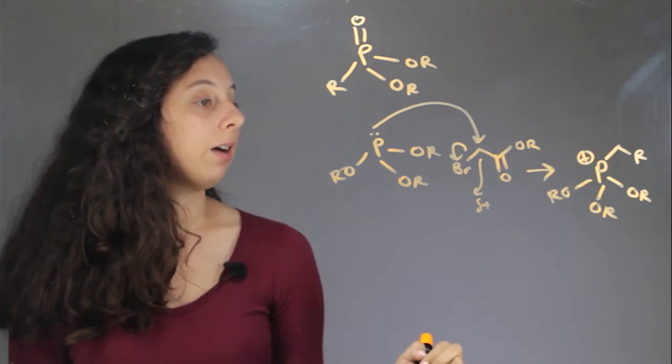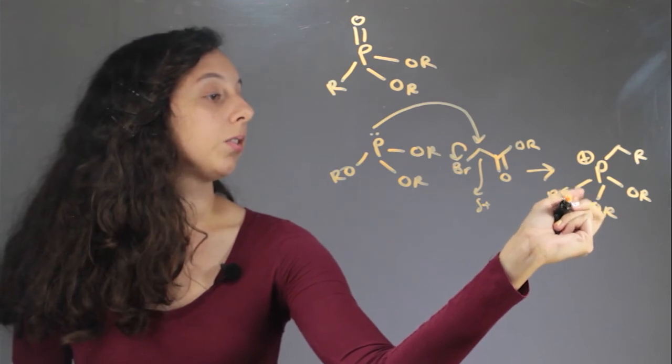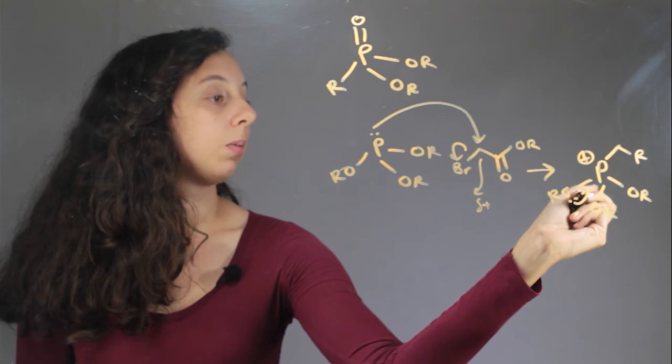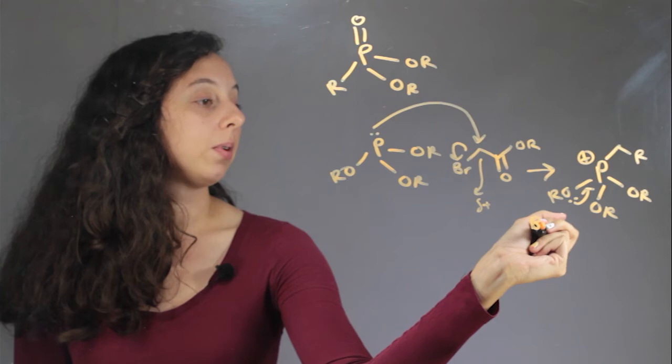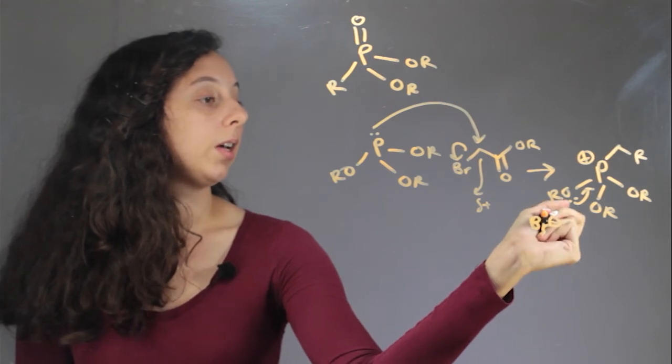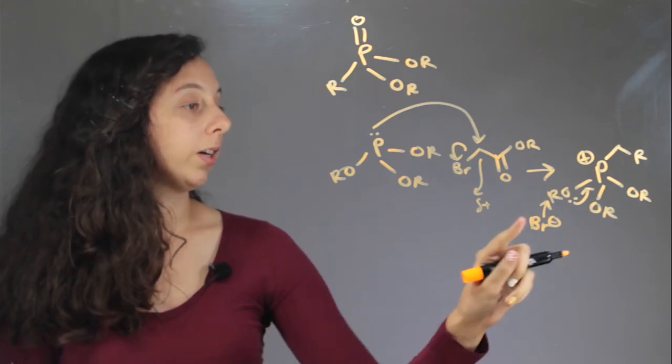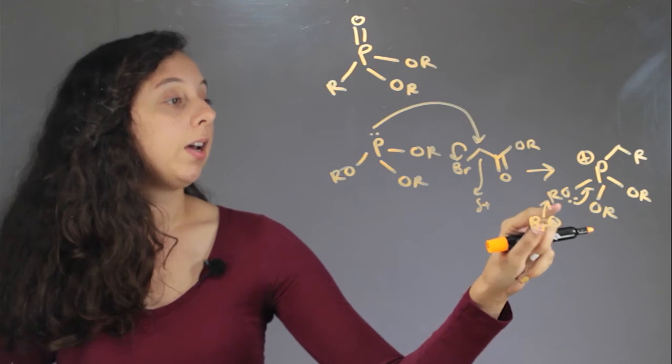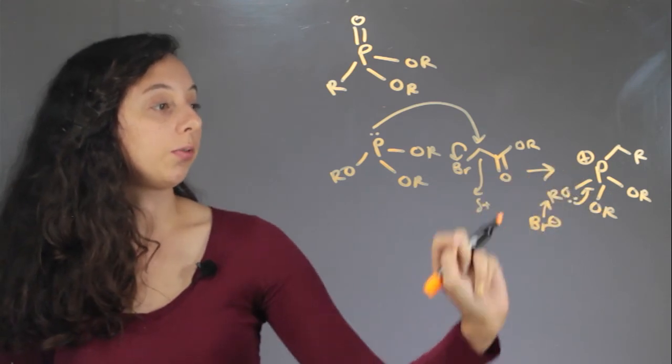So now what happens is one of these oxygens comes down and it's going to reform the double bond to the O, and at the same time the bromine which is left in the last step is going to bond to this R group. So very carefully we have this bromine picking up an alkyl substituent and we have these extra electrons on the oxygen reforming a double bond with phosphorus.